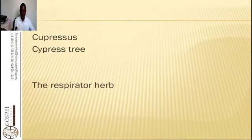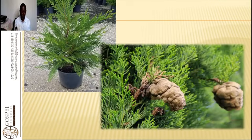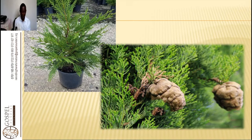We are looking at an important herb: the cypress tree. The cypress tree is known as a respiratory herb and boosts circulation. It is one of the most important, oldest remedies that has been used over time. Cypress almost grows everywhere and can grow in any place. It was used in the old times to treat very many complications.